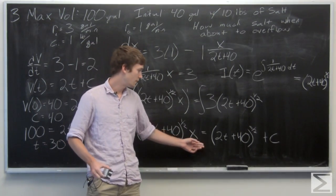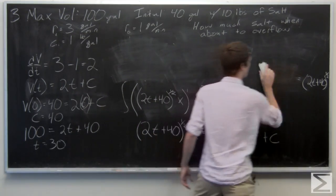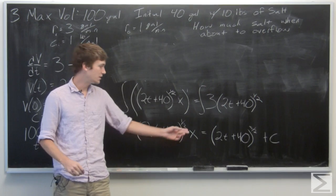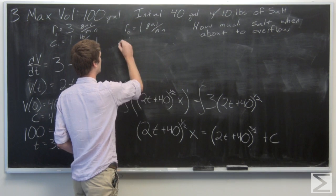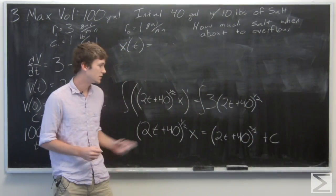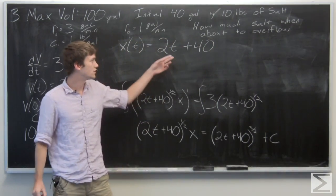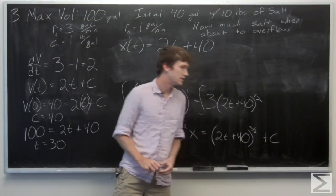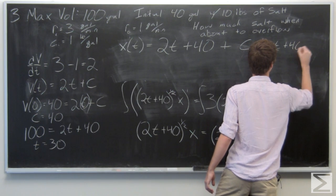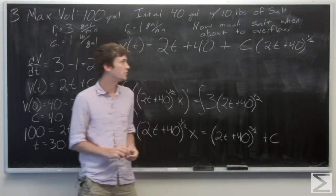Now we solve for x by multiplying both sides by (2t + 40)^(-1/2). For the first term, the exponent becomes -1/2 + 3/2 = 2/2 = 1, so the first term is simply (2t + 40). Then we multiply the constant by (2t + 40)^(-1/2), giving us x(t) = (2t + 40) + C(2t + 40)^(-1/2).